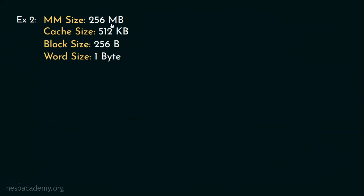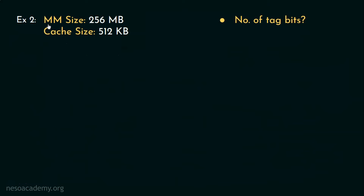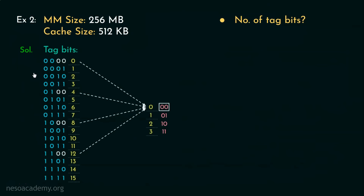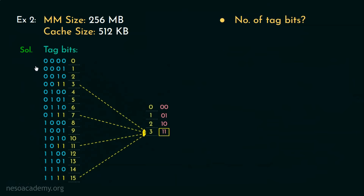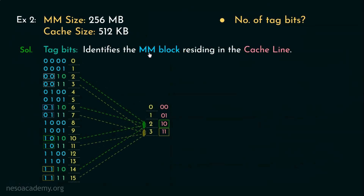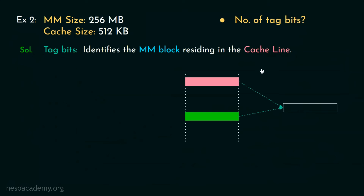Consider example number 2. Main memory size is 256MB, cache size is 512KB, block size is 256 bytes and word size is 1 byte. We are asked about the number of tag bits. In direct memory mapping, to find the number of tag bits, we don't really need all that information — only the main memory size and the cache size are sufficient. Before solving, let's understand the significance of tag bits. Direct mapping uses a many-to-one relation, and tag bits help us identify which main memory block is residing in a cache line at a given time.